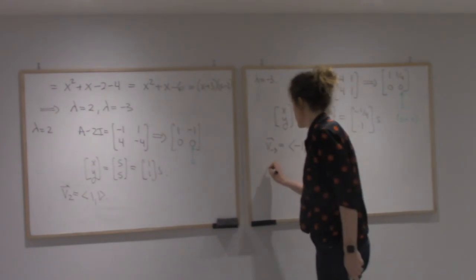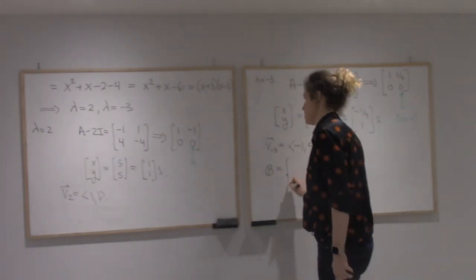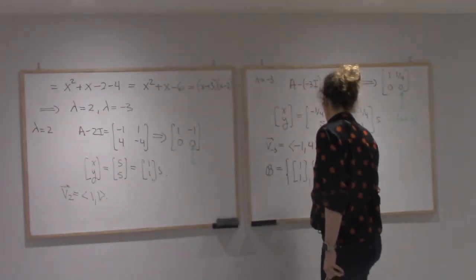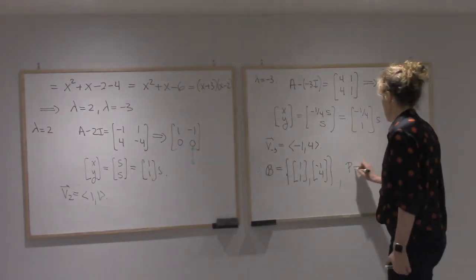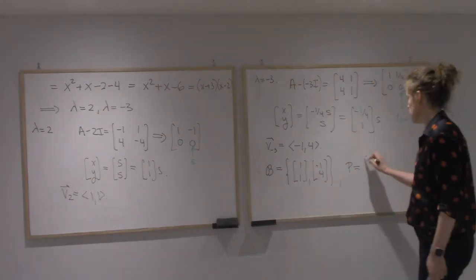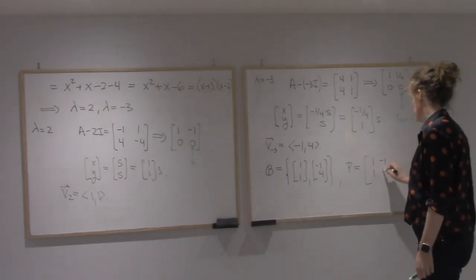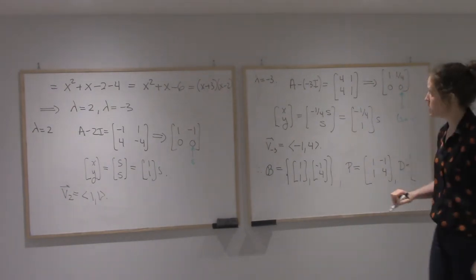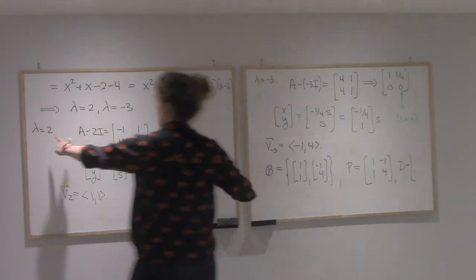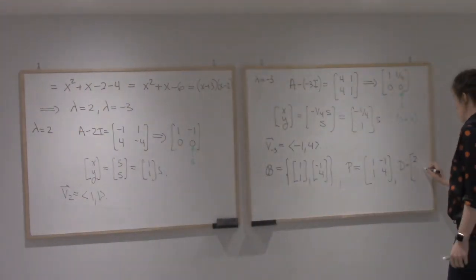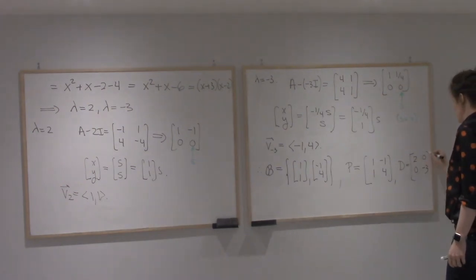So my basis of eigenvectors will be (1, 1) and (-1, 4). That means my change of basis matrix P from the standard matrix to this one will be [1, -1; 1, 4]. And my diagonal matrix D will have the eigenvalues on the diagonal, so that's [2, 0; 0, -3].